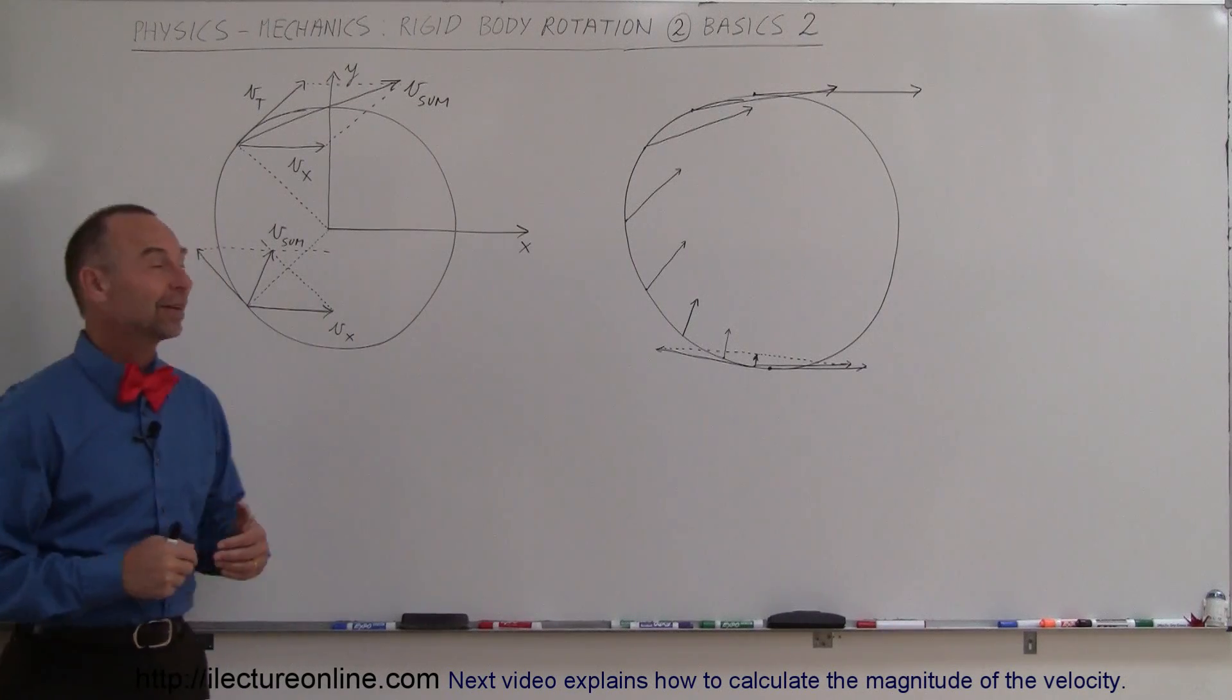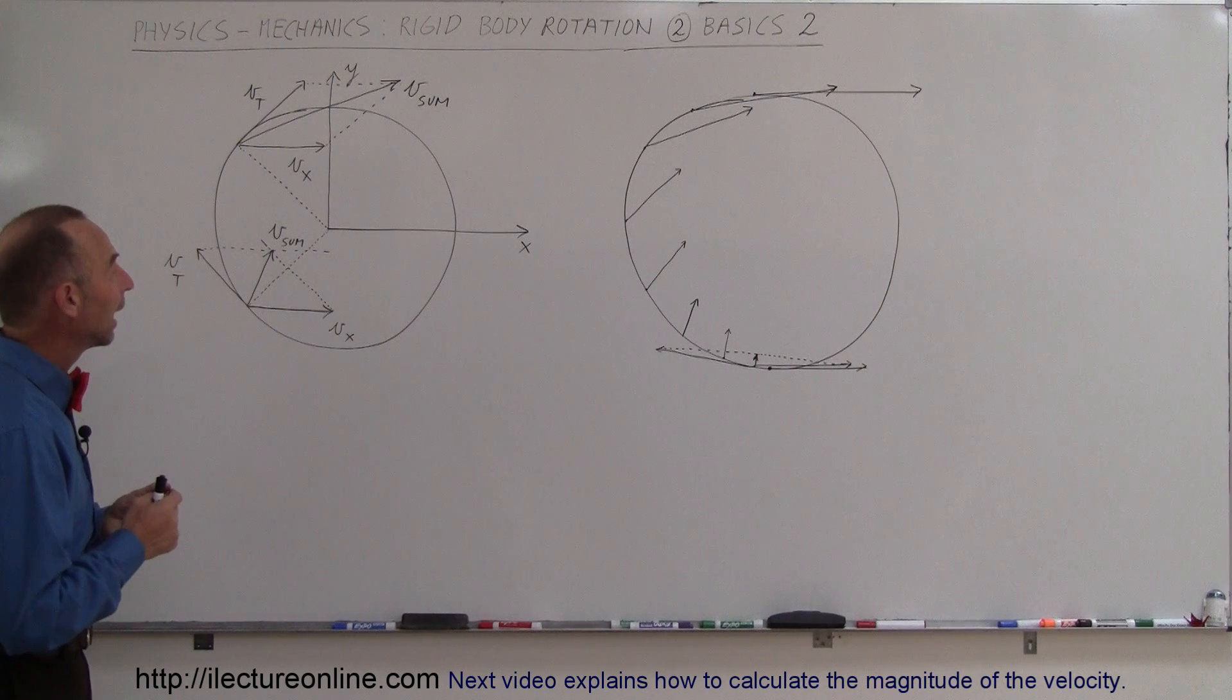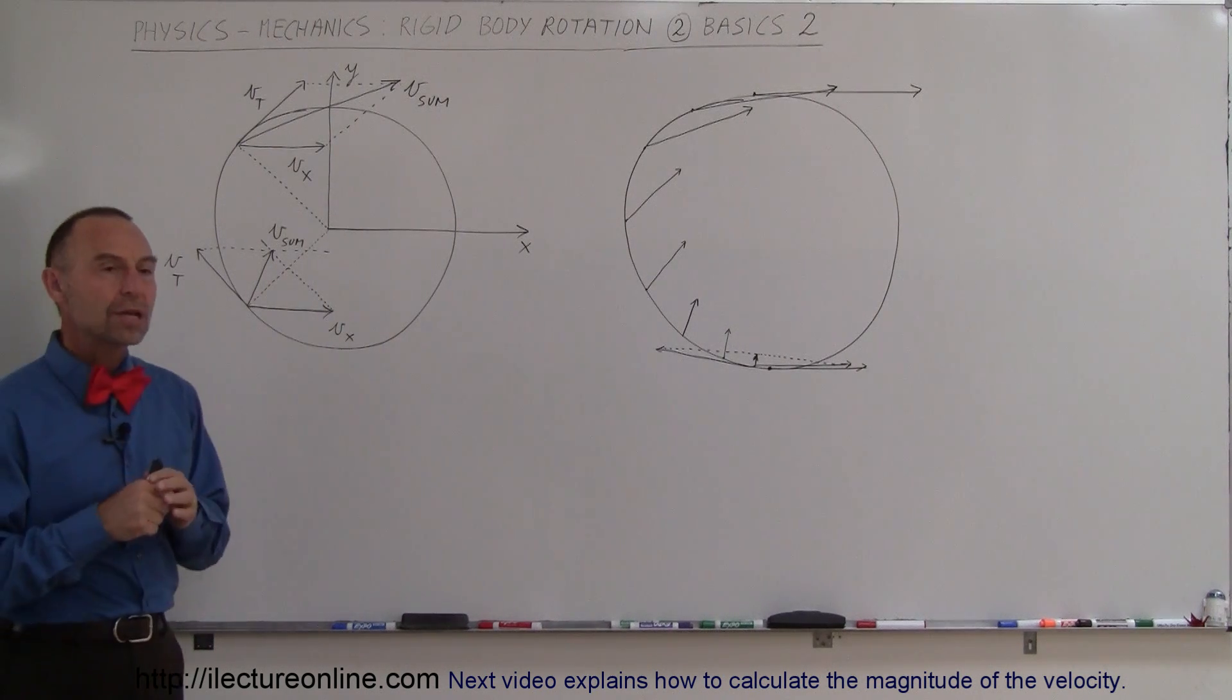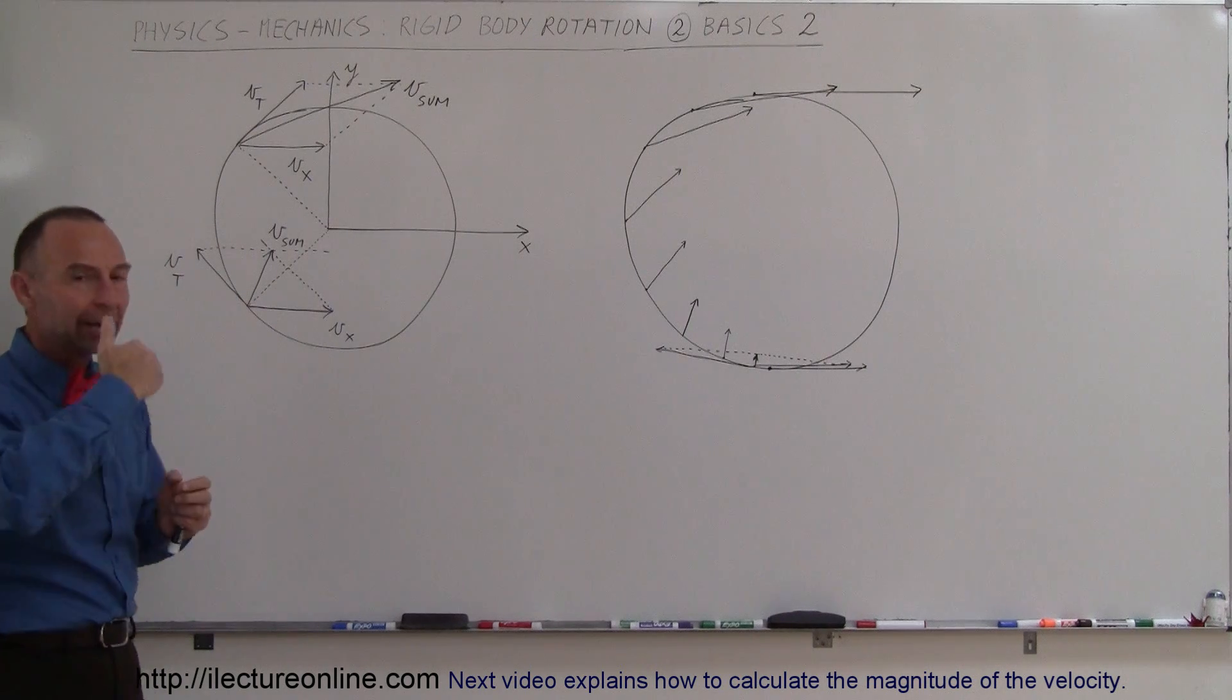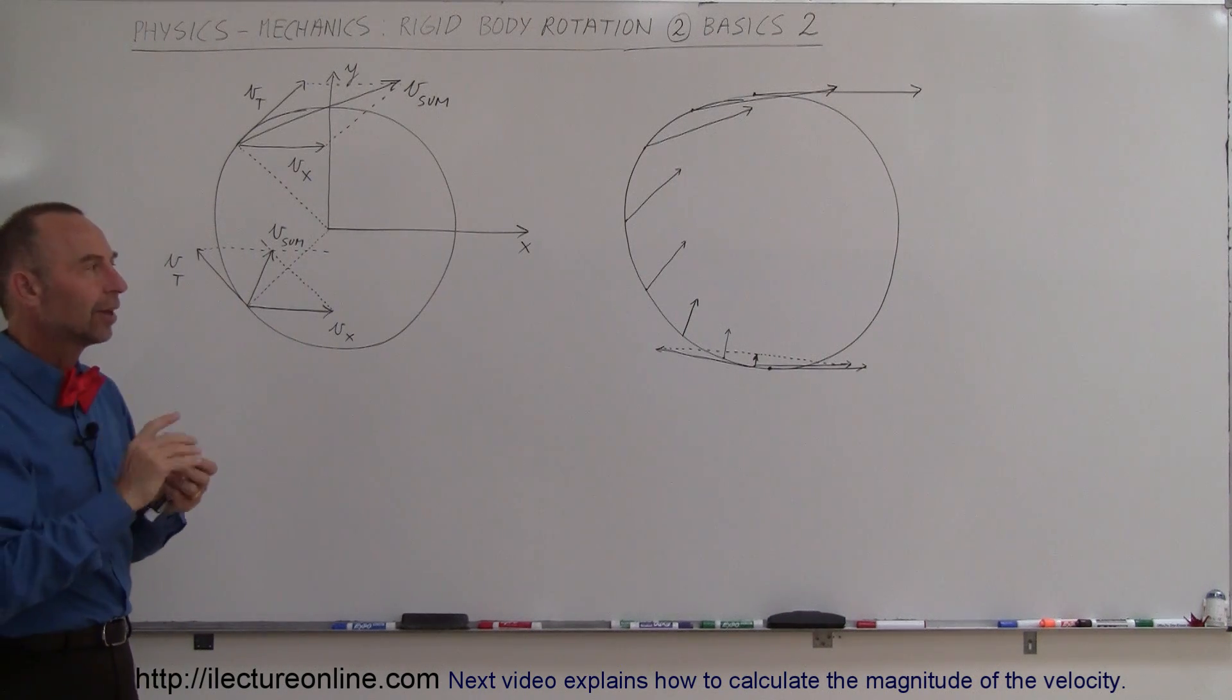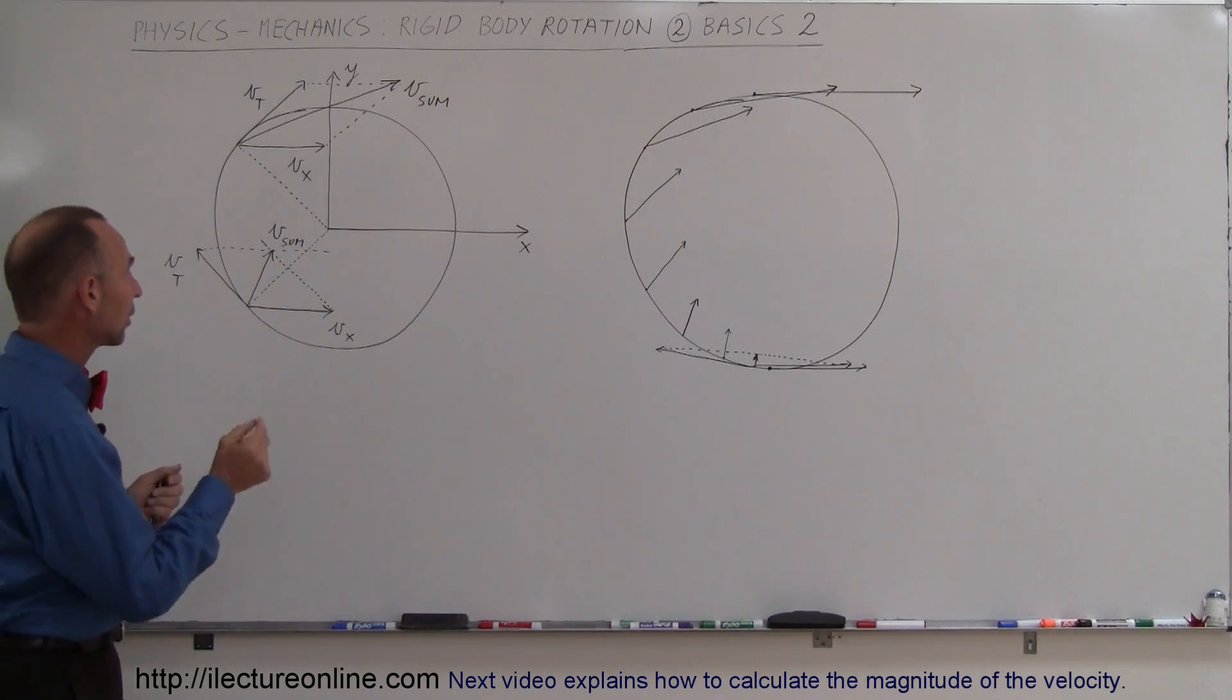Welcome to Lecture Online, and here's our next video on rigid body rotation. What I want to show you here is how things change visually as a tire or rigid body rotates. This visualization helps you understand what's really going on. Let's consider a point on the tire at about a 45-degree angle below the horizontal, looking from the negative x-axis.